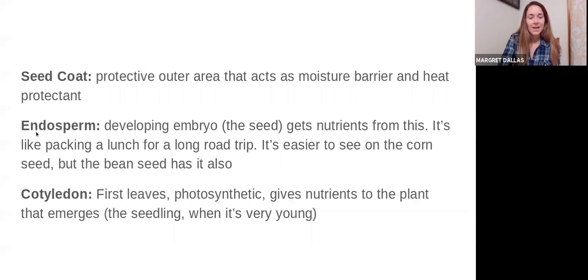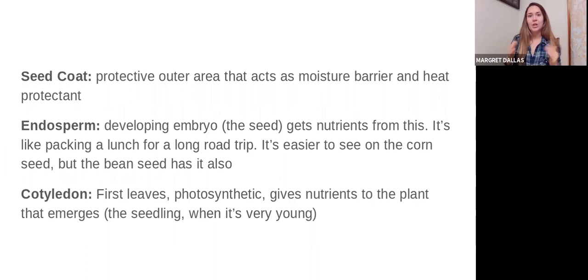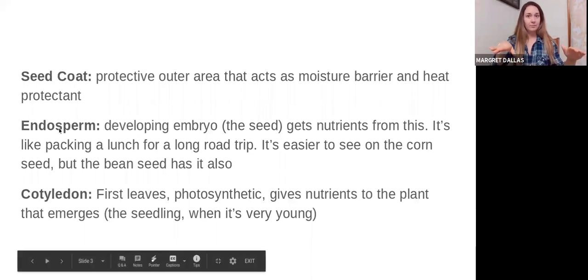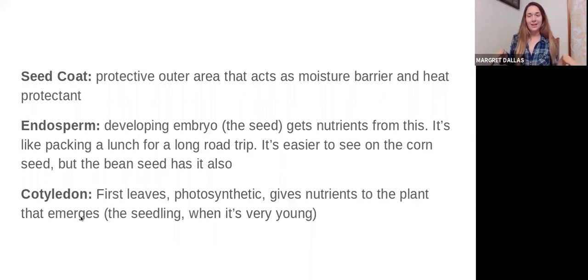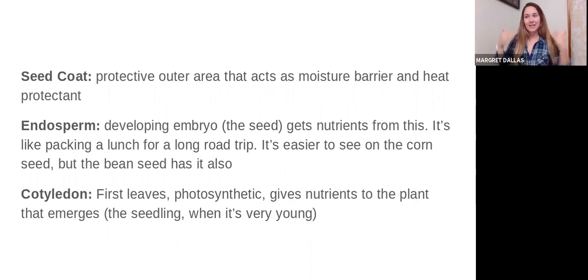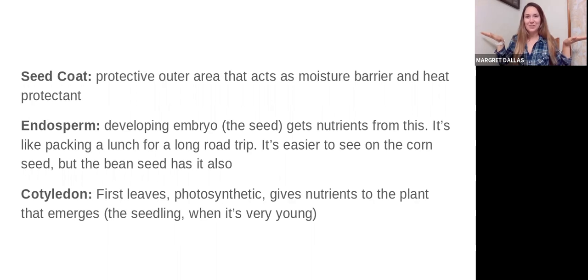That's what the endosperm does — it acts as nutrients to give that embryo the best chance and all the energy needed to get to the surface. The cotyledons give the plant energy once it's above the surface. The seedling uses up all its endosperm getting to the surface, so the cotyledon acts like a little jet pack — in a bean plant, it unfurls above the surface into two tiny leaves that do photosynthesis right away. This gives the seedling energy while it takes time to grow true leaves, develop its shoot system, and get taller.